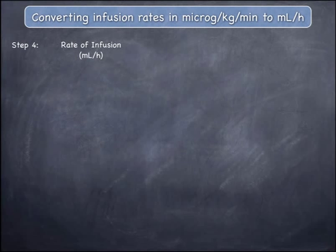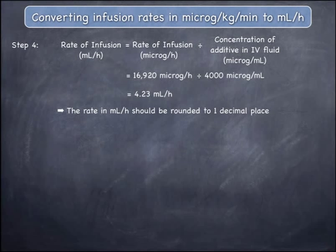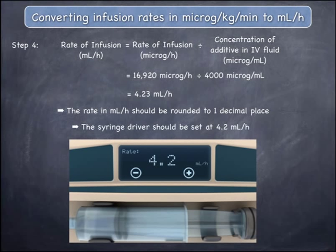The fourth and final step allows you to calculate the infusion rate in mils per hour, by dividing the infusion rate in micrograms per hour by the concentration of the additive in the IV fluid in micrograms per mil. This is 16,920 micrograms per hour divided by 4,000 micrograms per mil, which is 4.23 mils per hour. The infusion rate should be rounded to one decimal place, and therefore the syringe driver should be set to deliver an infusion rate of 4.2 mils per hour.